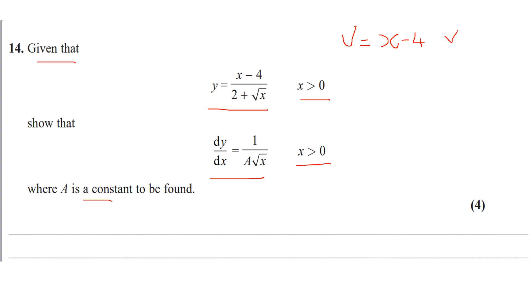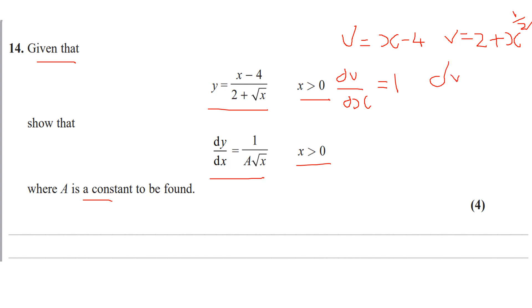I'll write it in index form just to make it a bit clearer and easier. You can differentiate it however you want, but personally I'll write everything in index form, because then it makes it easier to work with du/dx. So du/dx is going to be 1 — x goes to 1 when you differentiate it.